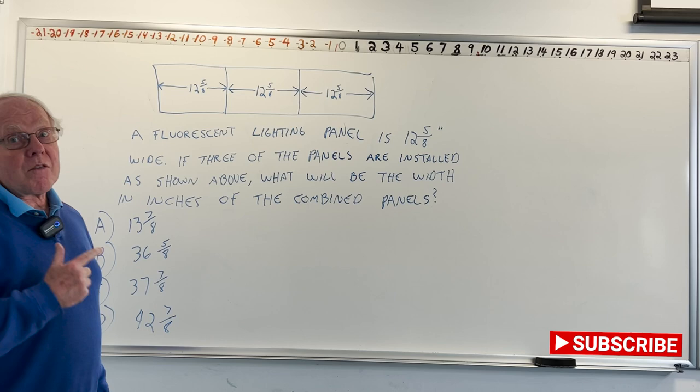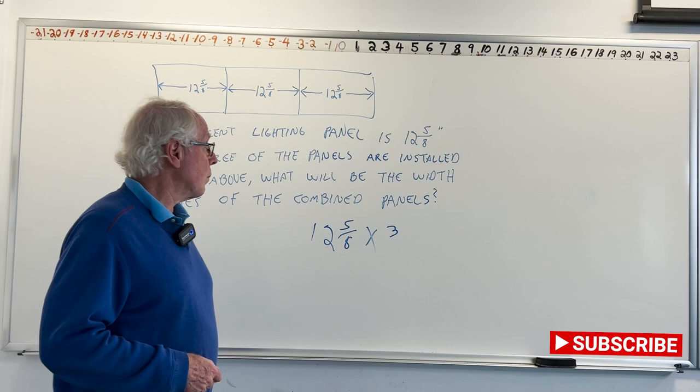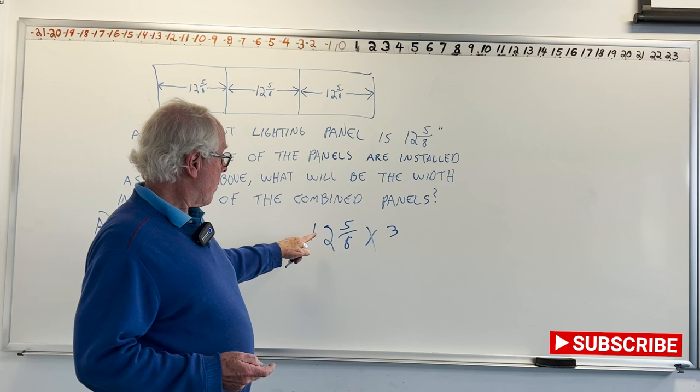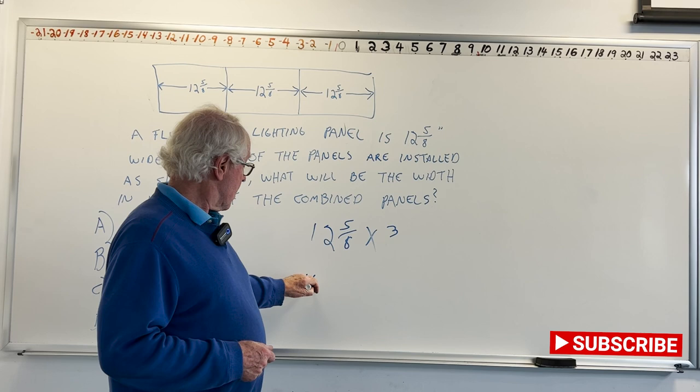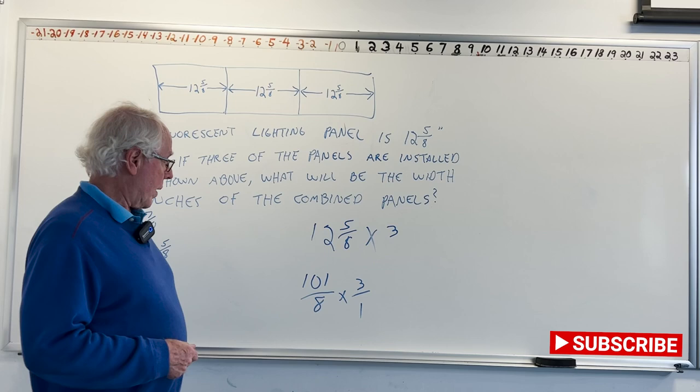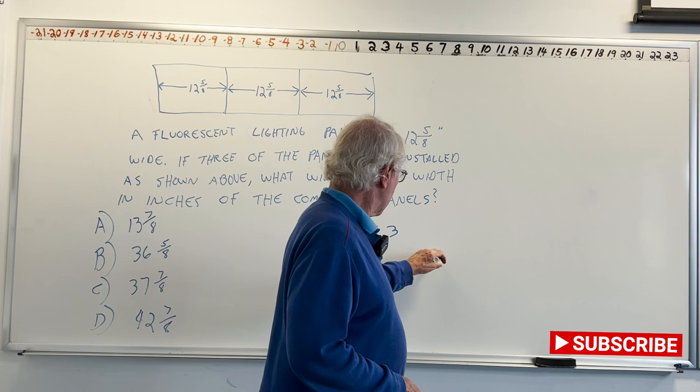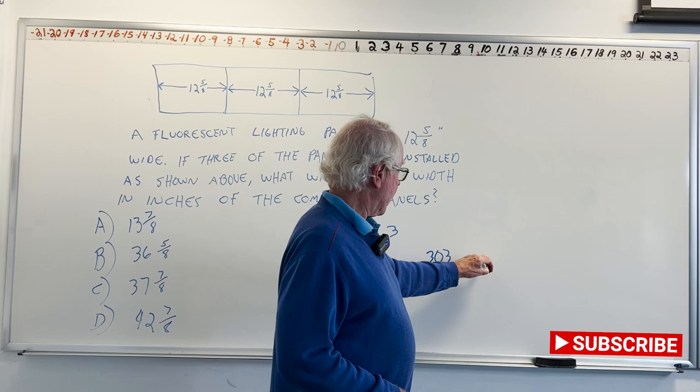In fact, multiplication is fast addition. So the problem is going to be 12⅝ and we want three of them. So multiplication, 12⅝ times 3. So as usual, change this into an improper fraction. 8 times 12 is 96 plus 5 is 101/8 times 3 over 1. Not the greatest numbers, but they're not too bad. No canceling this time. 3 times 101, I can do in my head because I know that 3 times 100 is 300 and 3 times 1 is 3, but you can check it and I think we'll come up with 303 divided by 8.